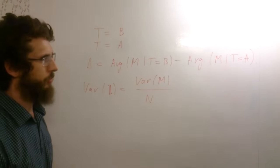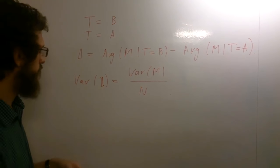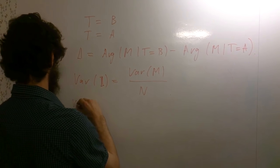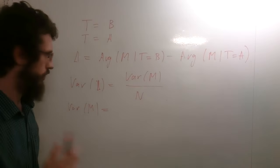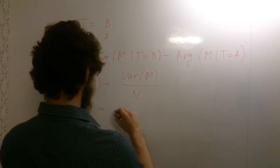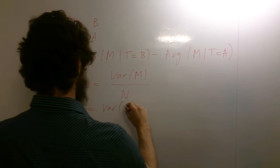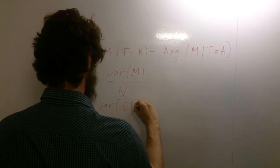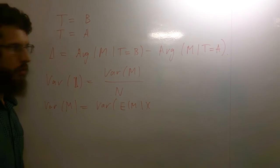The way we propose in our paper to reduce this variance is to see that the variance of our measure in fact consists of three components. One component is the variance of the expected value of the measure conditioned by some features of the user.